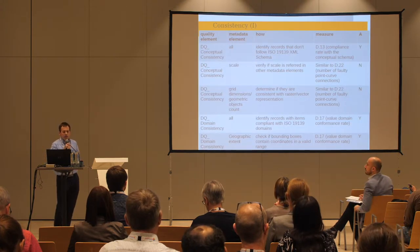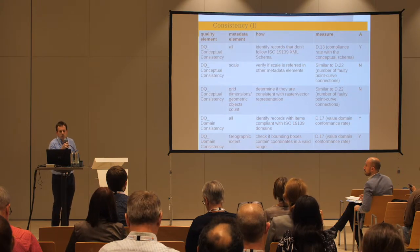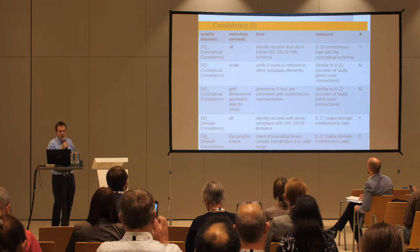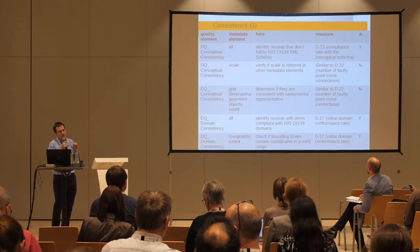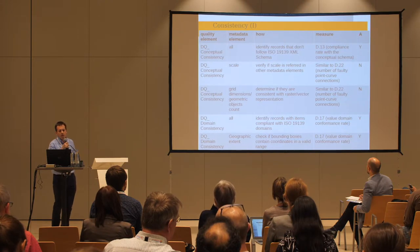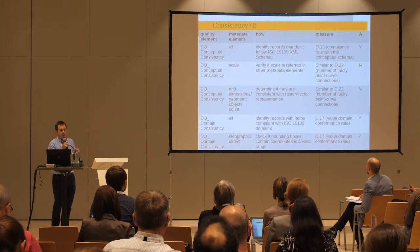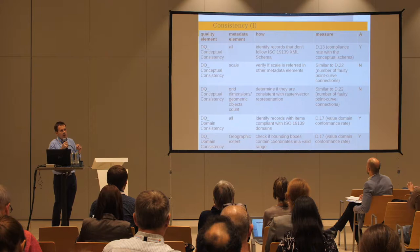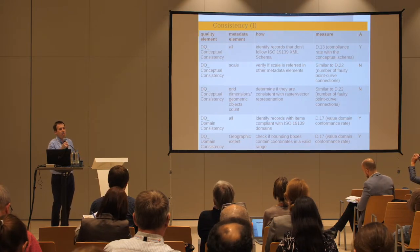About consistency, we check typical conceptual consistency — whether metadata records follow the ISO 19139 XML schema. But we also check specific consistency for some elements, for example scale, grid dimensions, or the count of geometric objects, checking if these metadata elements are consistent with the rest of the information found in the metadata records.